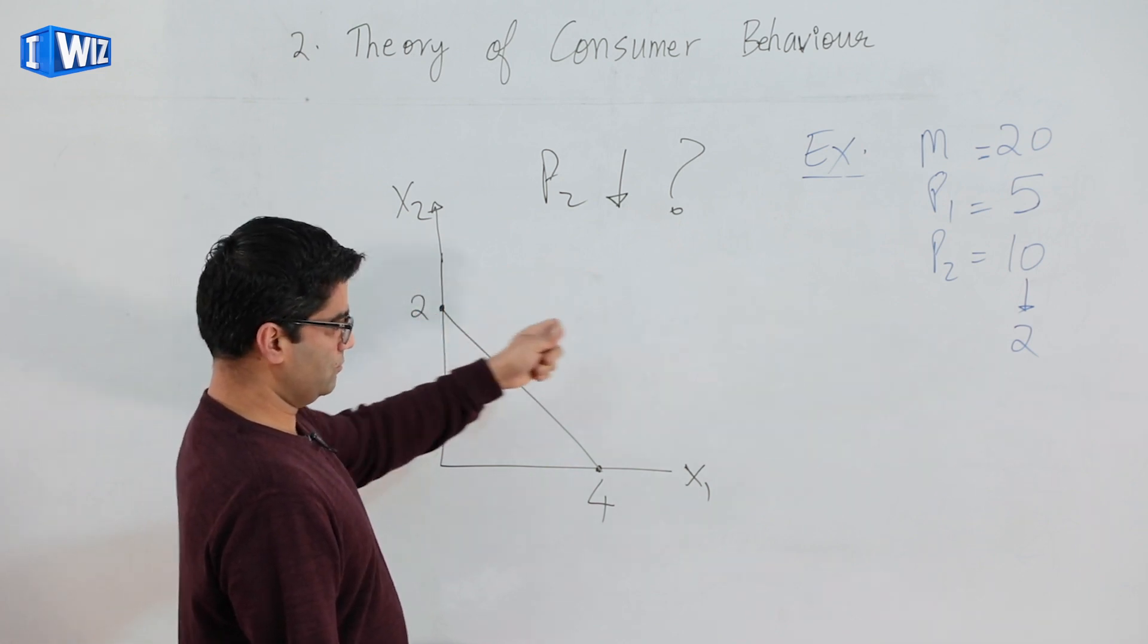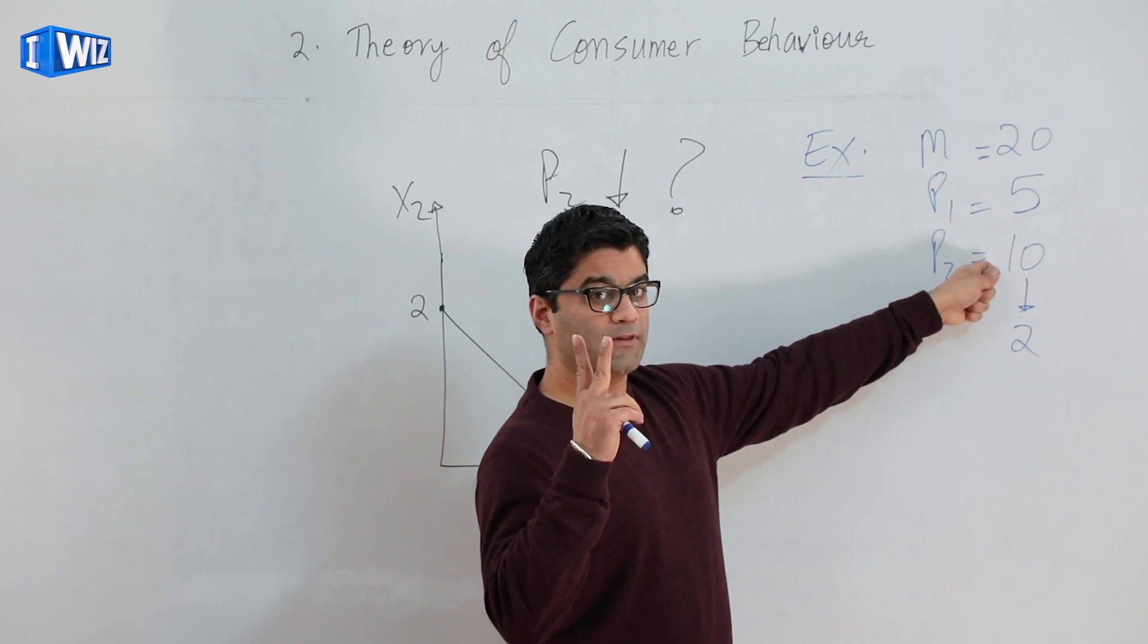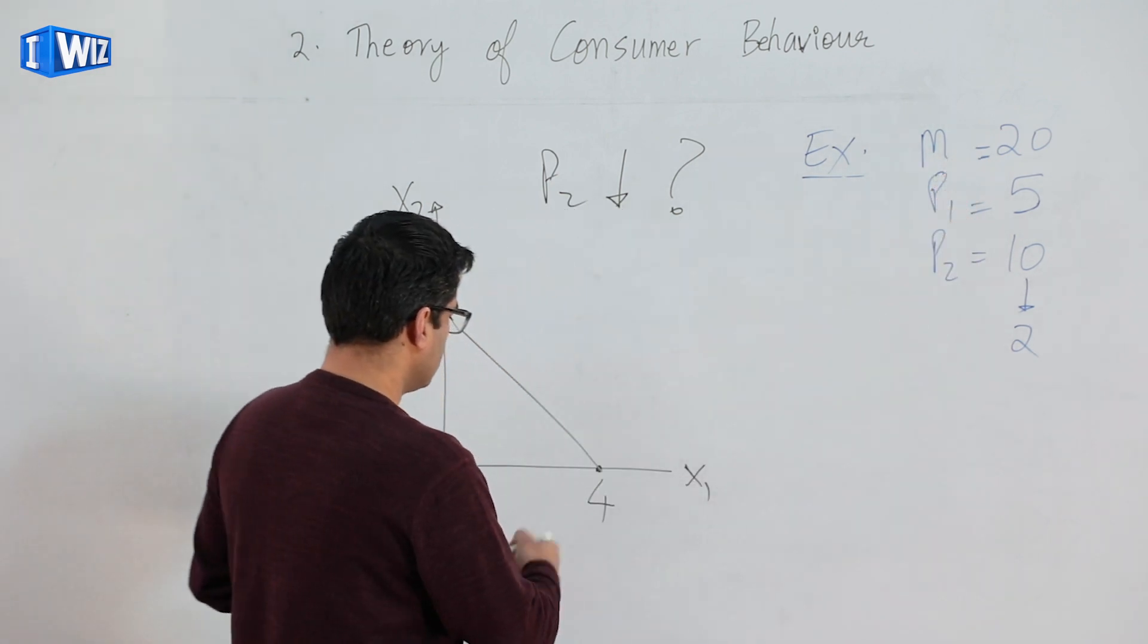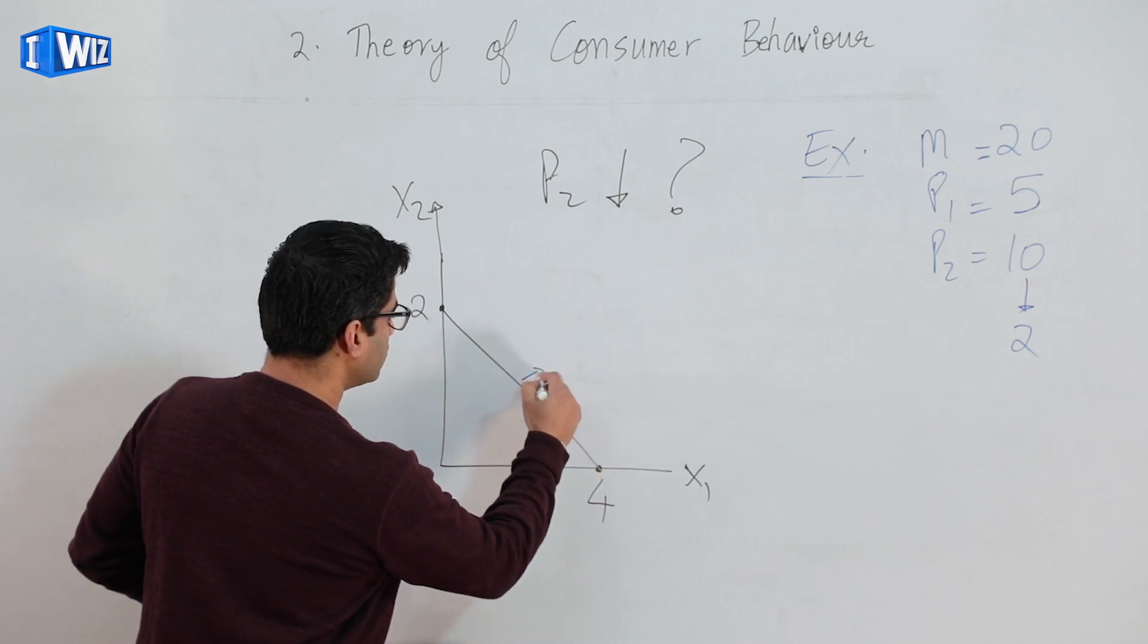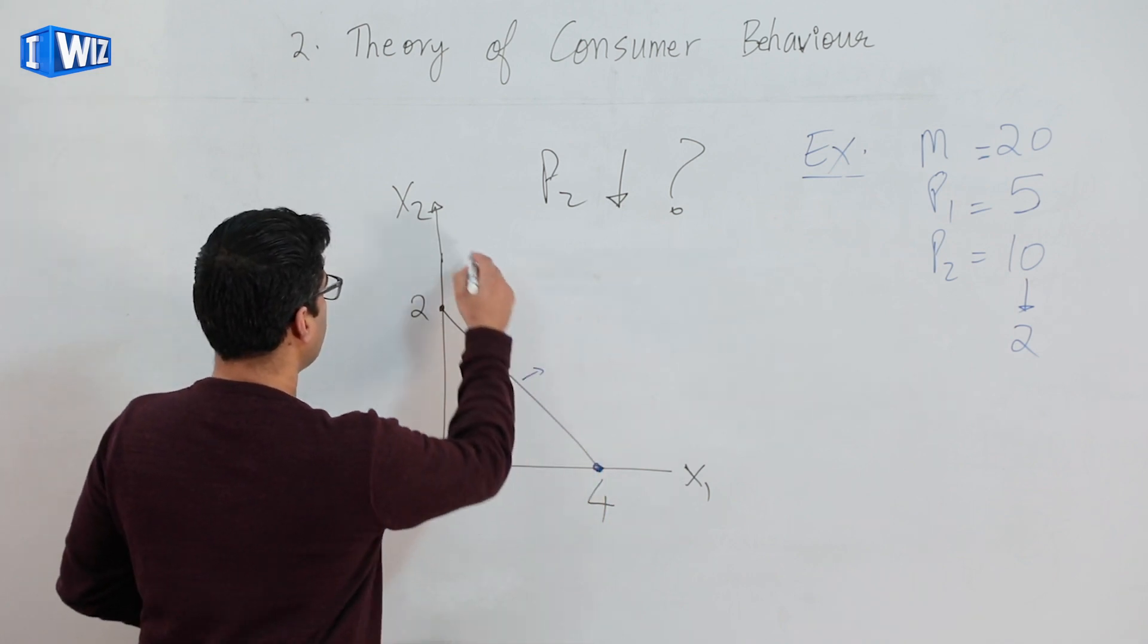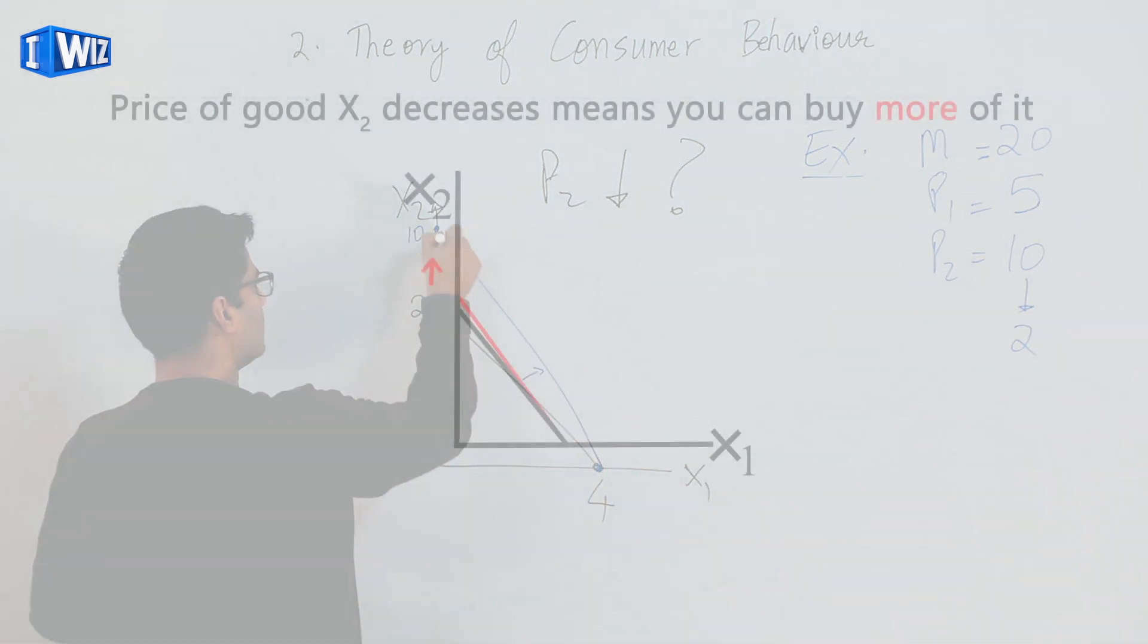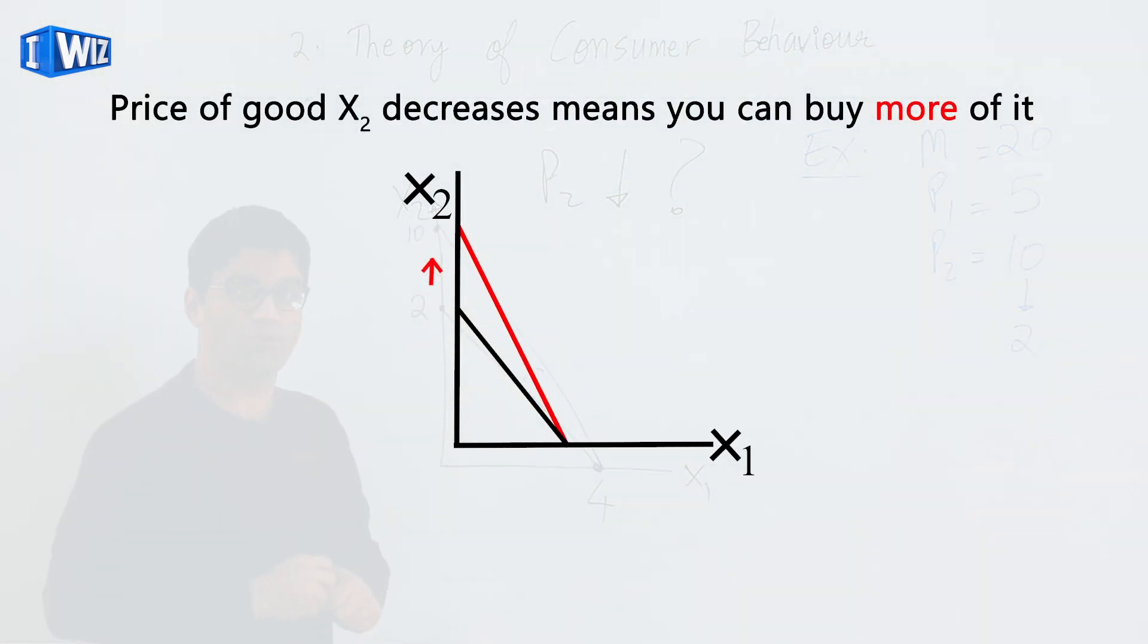You were able to only afford two of them. Now you can buy ten of good two if you buy nothing but good two. So this line is going to move outward. This is going to be one point, and this is ten. So it's not drawn to scale, but that's fine. Your budget constraint is going to move out.